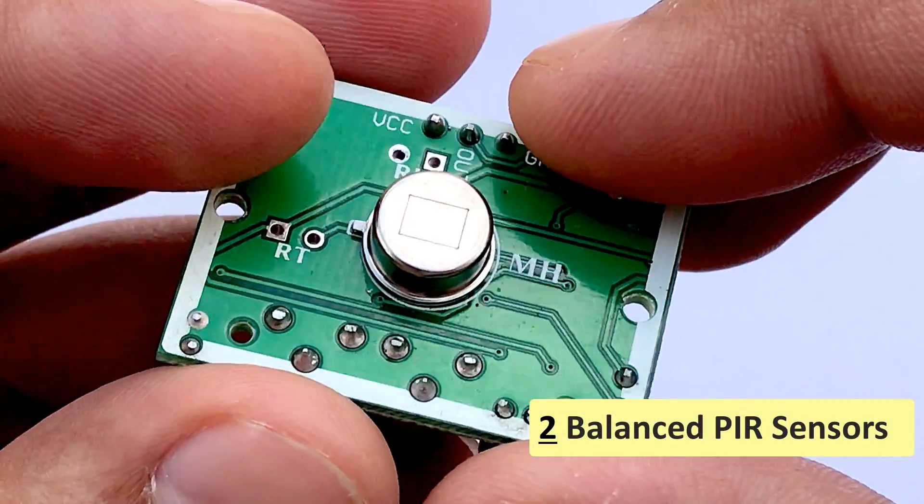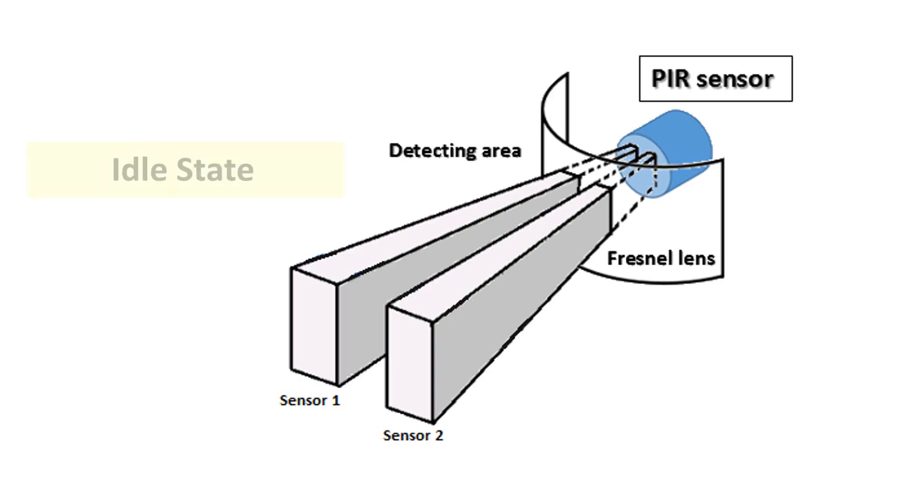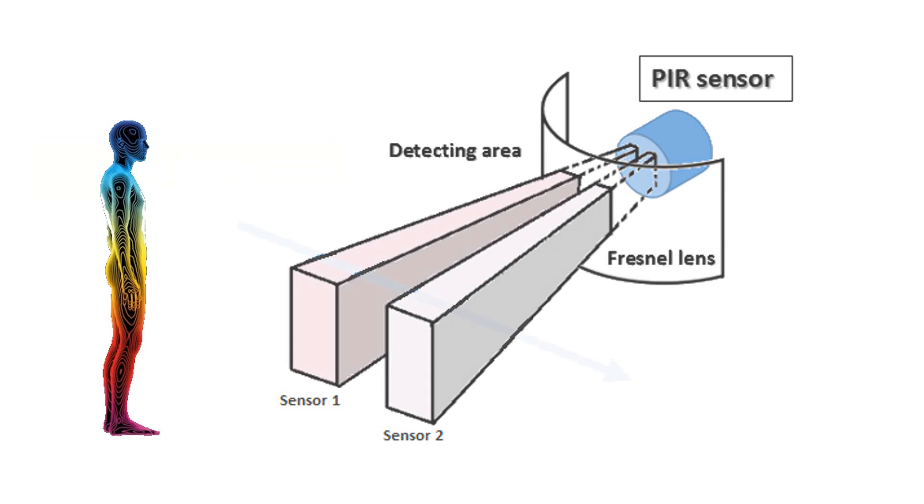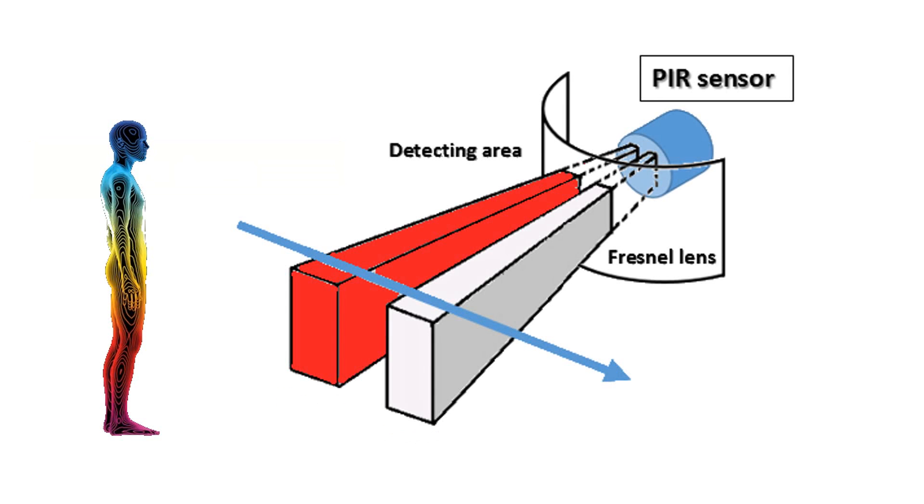Behind this window are two balanced PIR sensors. In idle state, both sensors detect the same amount of IR radiation. When a warm body passes by, it first intercepts one of the two sensors, causing a positive differential change between the two halves.